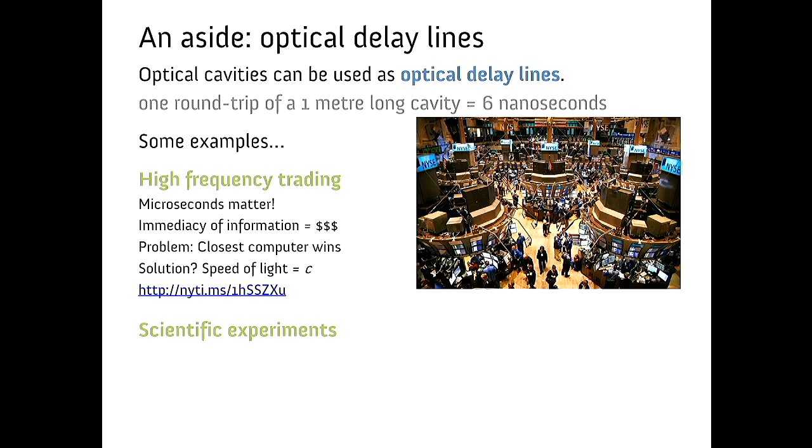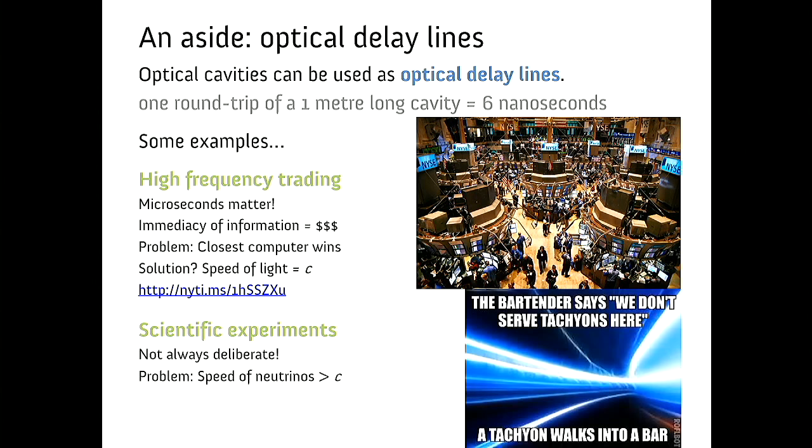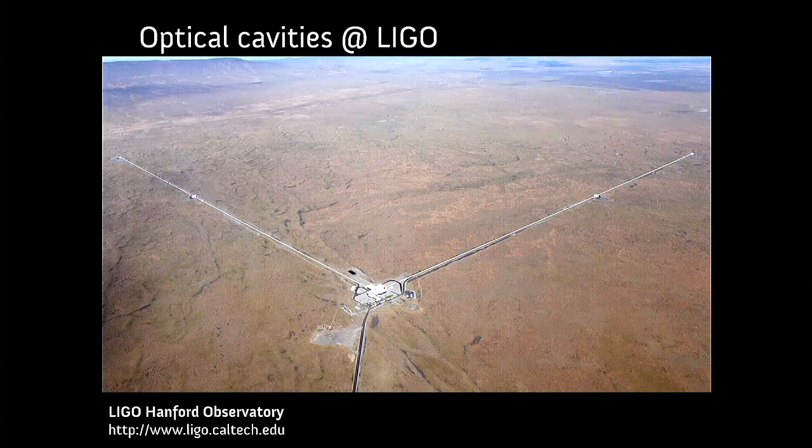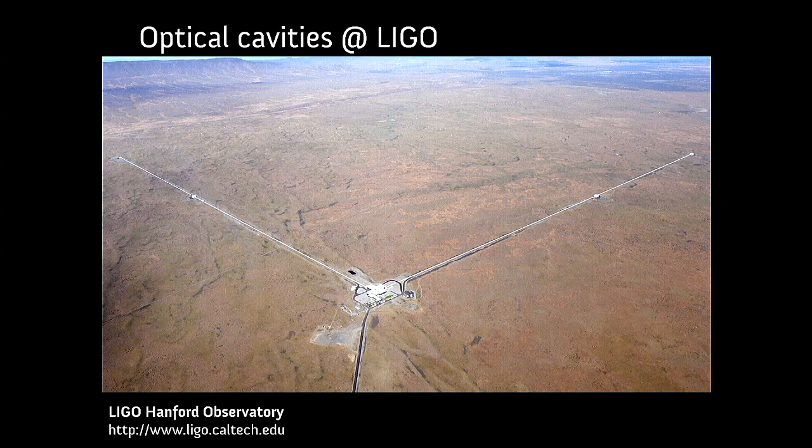Delay lines are also used in scientific experiments. Sometimes for good as we'll see next but sometimes accidentally. A great example where people claimed quite unprobabilistically that they'd seen faster than light neutrinos a couple of years ago - of course this wasn't the case. They had actually built an optical delay line without knowing it. They had not screwed an optical fiber connector in properly and they'd made a little delay line between the fiber tip and the fiber and that caused some delay.